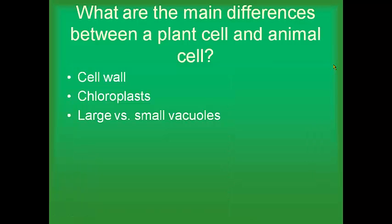So what are the main differences between plant and animal cells? Plant cells have a cell wall; animal cells do not have a cell wall and don't need one. Plant cells in the leaves and places where photosynthesis happens have chloroplasts, which contain chlorophyll — a green chemical that makes the leaves look green. Animal cells have no chloroplasts because animal cells do not make their own food from the sun. And in a plant cell, you have very large vacuoles to hold a lot of water, while in an animal cell you have very small vacuoles.